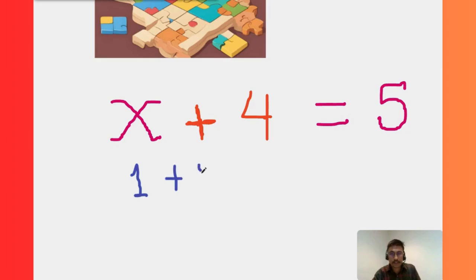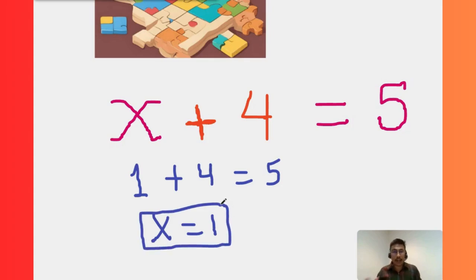Think about this. 4 is here, and then that means x is 1. You know, 1 plus 4 gives us 5. So over here, this x value is 1. Now this algebra helps us to write the English sentences, the situation, in the math form.